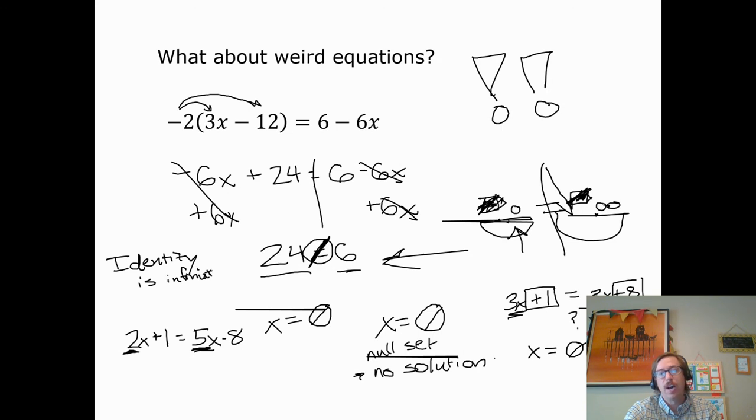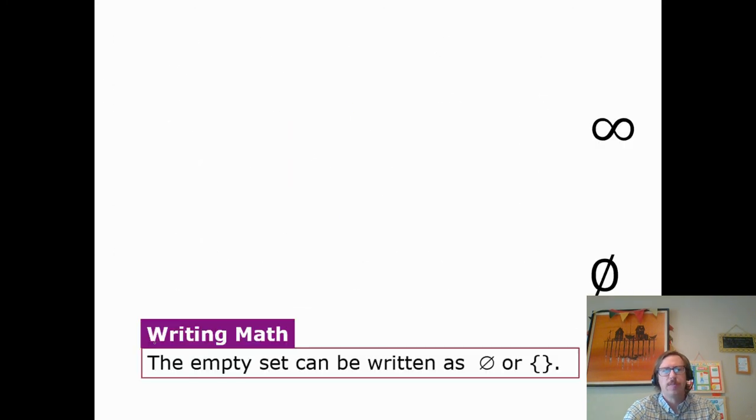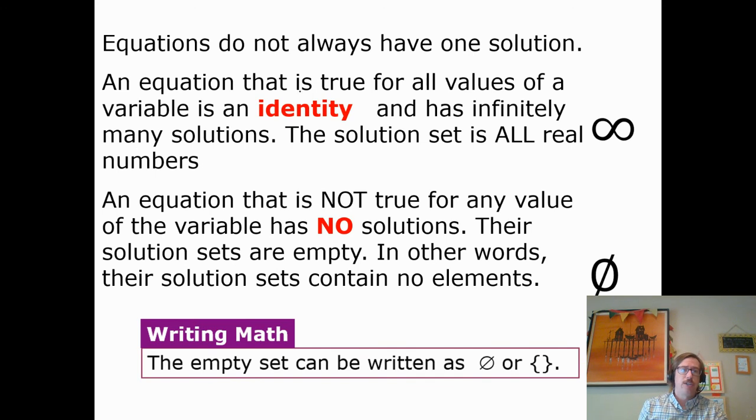So if I have a 2x on one side, 2x plus 1 equals 5x minus 8, as long as the coefficient is different, we can solve the problem. We will get a single number that always works for x. But anytime you see the coefficient is the same, you know you've got either no solution or infinite solution. Infinite starts with the same letter i. Identity is infinite. And if you think about it, unbalanced means no solution. Because there's no solution when something is unbalanced.